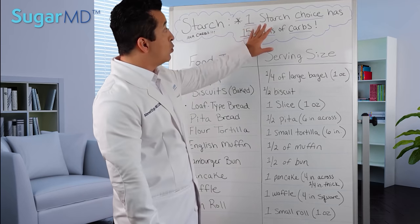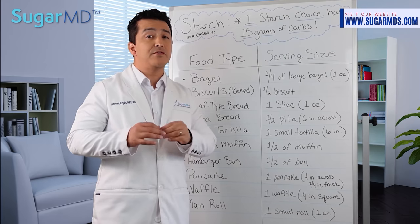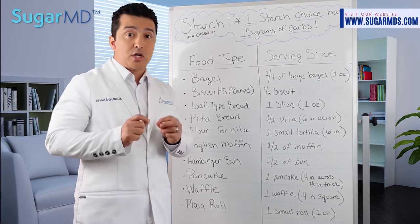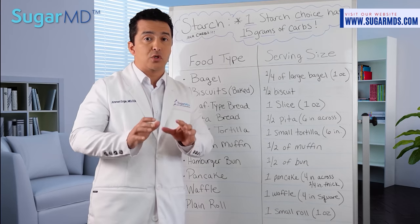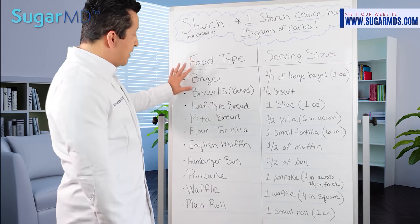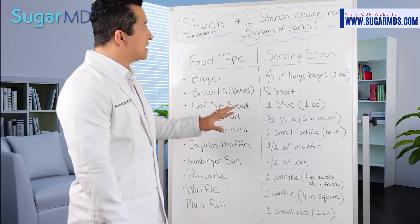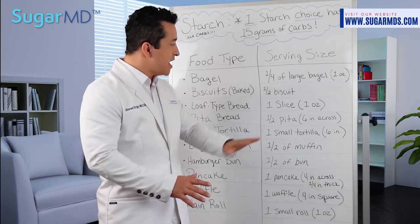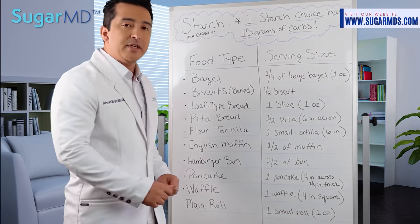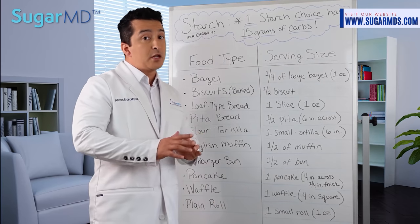So for starches, we're looking at one starch choice, which equals 15 grams of carbs — not pounds, not kilograms, it's grams. It's universal; on every food label you're going to see grams. The serving sizes I'll tell you here are all based on 15 grams.